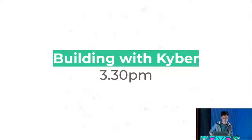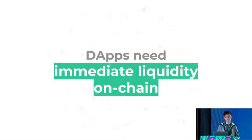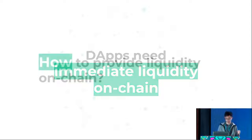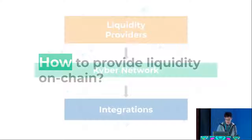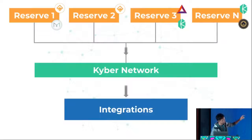As Anton has mentioned, later we have a workshop at 3:30, do check it out. The most important lesson we have realized is that for decentralized applications, they need liquidity on-chain immediately — you need it there and then. In order for that to happen, we have to work with different providers. There are many different reserve types that we have. Different reserves could offer different token pairs — for example, one reserve offers DAI and Maker tokens, another could offer KNC and BAT tokens. All these are quoted against ETH.